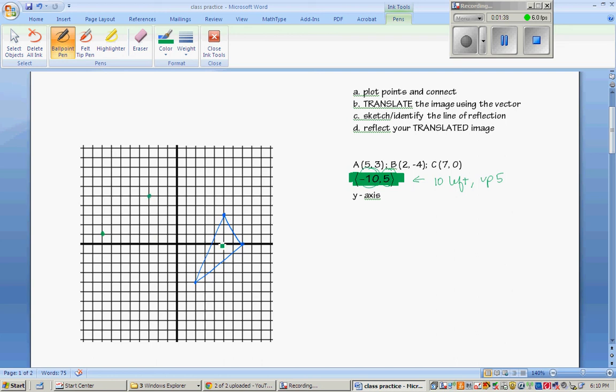Or what you could do is this point here that is at 5, 3. This point 5, 3, we could just add this vector to it and say 5 and negative 10 is negative 5. And 3 and 5 is 8.